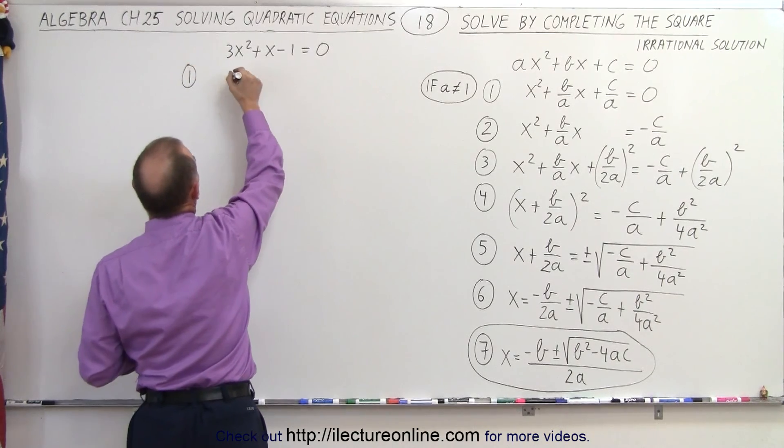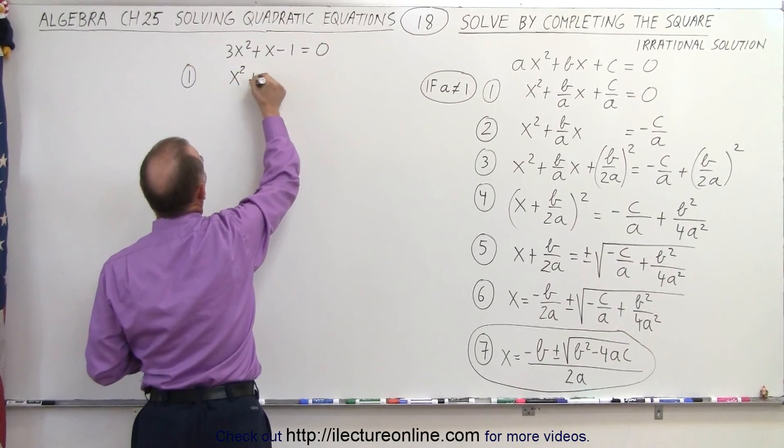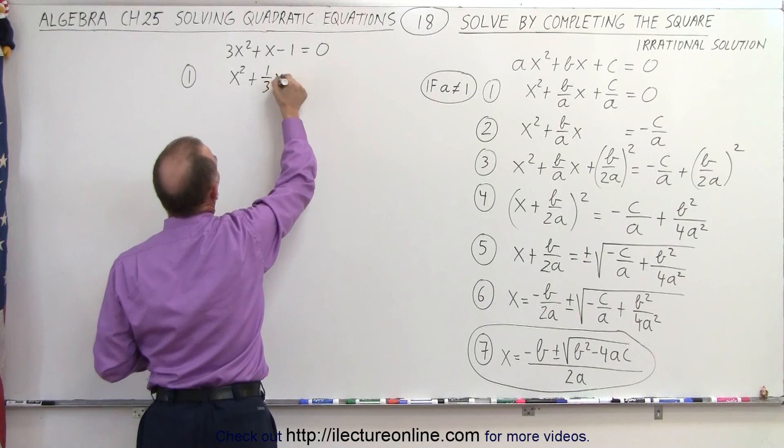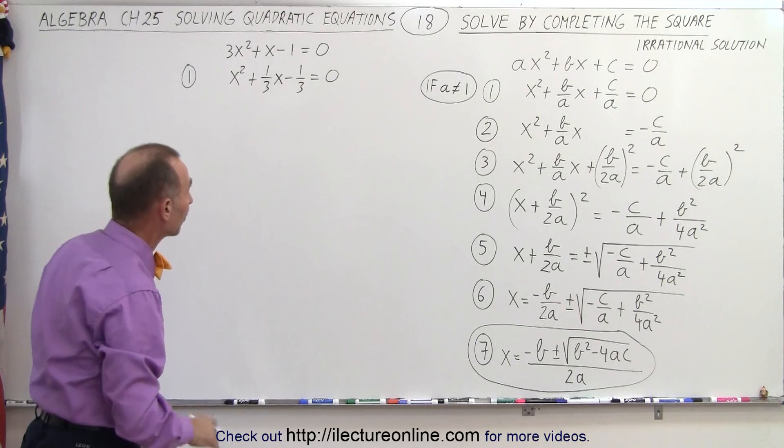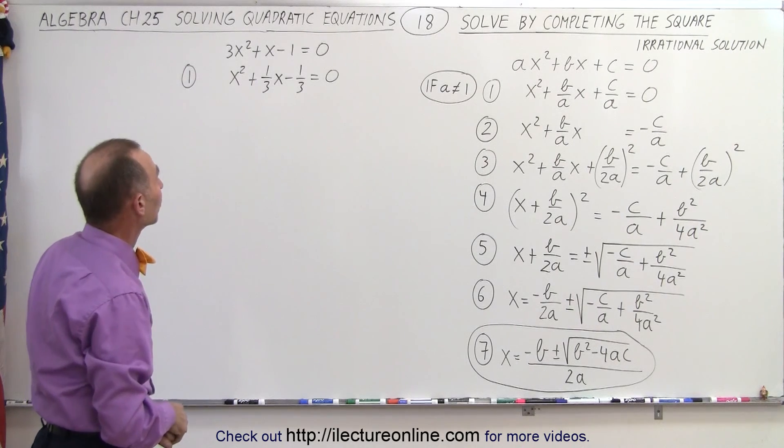So step number 1, we get x squared plus 1 over 3x minus 1 over 3 is equal to 0. So we've divided both sides of the equation by 3.